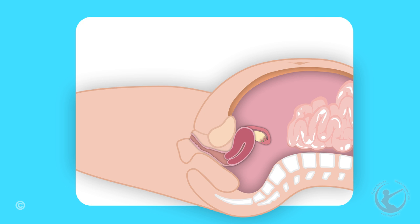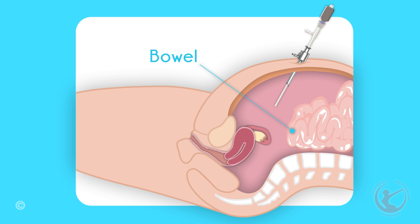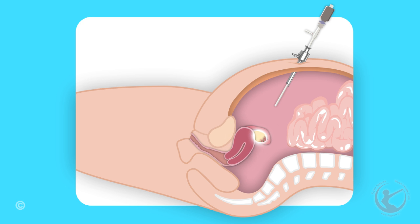Air is then passed through this needle into the abdomen. Once there is sufficient air in the abdomen, an instrument is passed into the abdomen and the telescope passed through this. The air in the abdomen compresses the bowel and allows me to see things easily. I can see your womb, ovaries, fallopian tubes and other abdominal organs including the bowel, liver, stomach, gallbladder, etc.